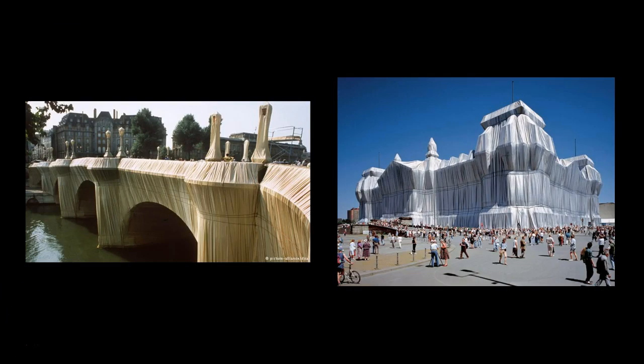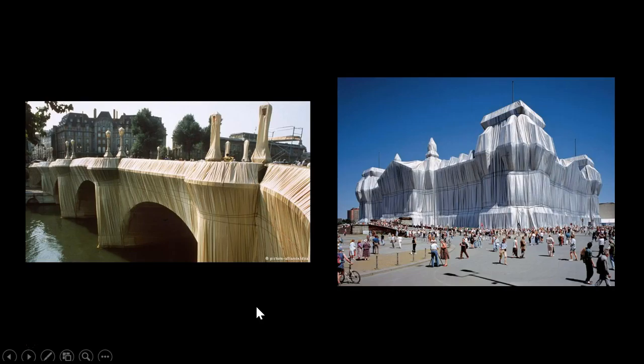Many of their works directly intervene in urban structure. Some of the ones we looked at before were more about the natural environment, but here we can see them taking materials and wrapping architecture — for example, the Pont Neuf in Paris, and the German parliament building in Berlin, where architectural masses are literally wrapped. It's incredible, and it really does make you stop and look at the environment, raising questions about what public art is and how we interact with it.